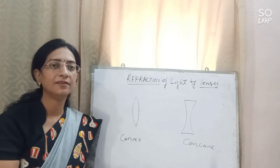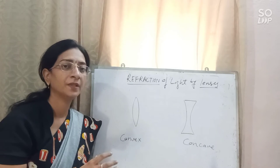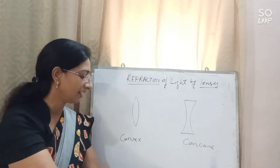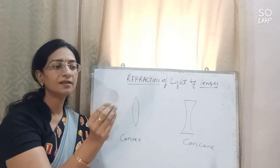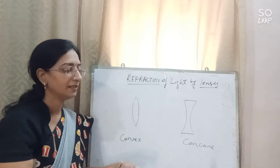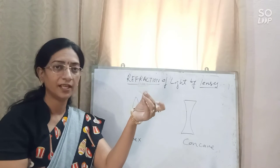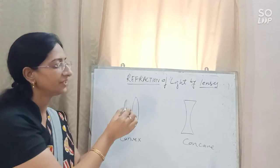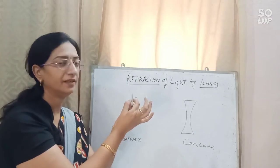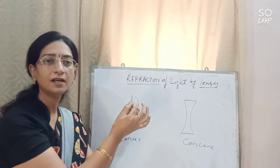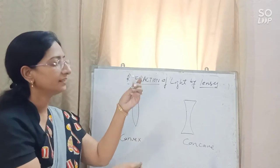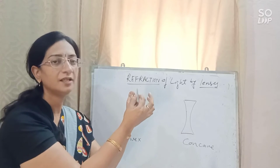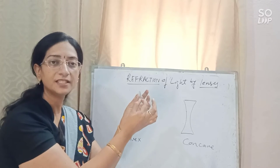When a ray of light passes through lenses, we have two types of lenses: a convex lens and a concave lens. The convex lens is thicker in the middle and thinner from the outside, while the concave lens is thinner in the middle and thicker from its edges.